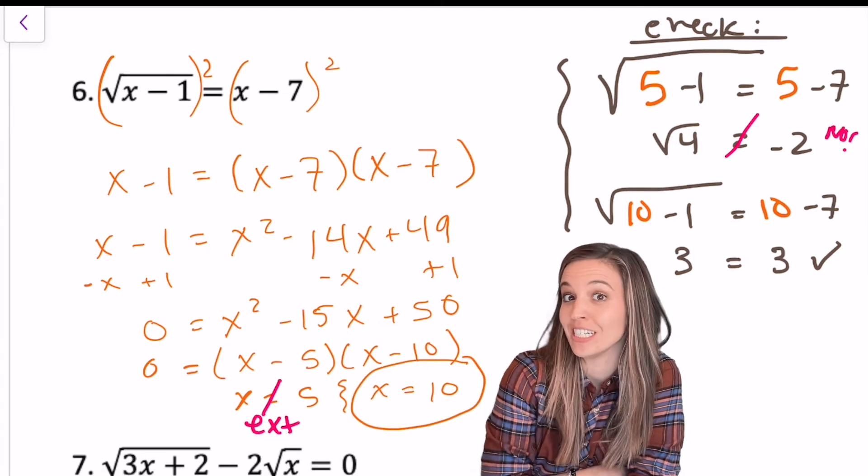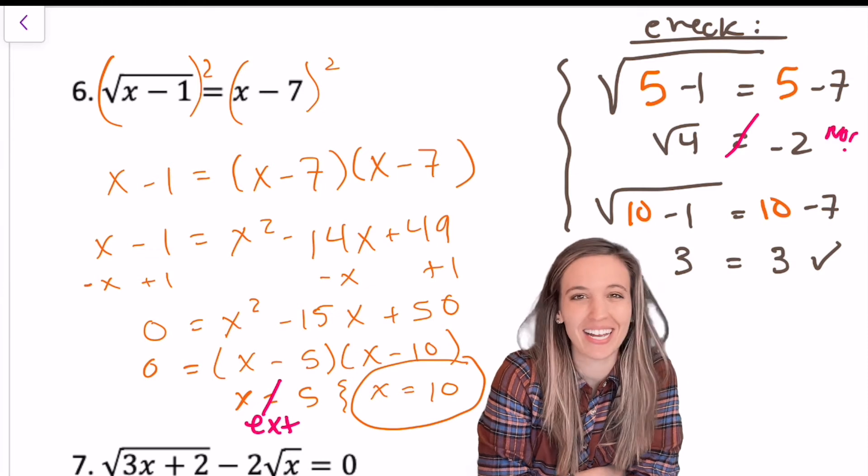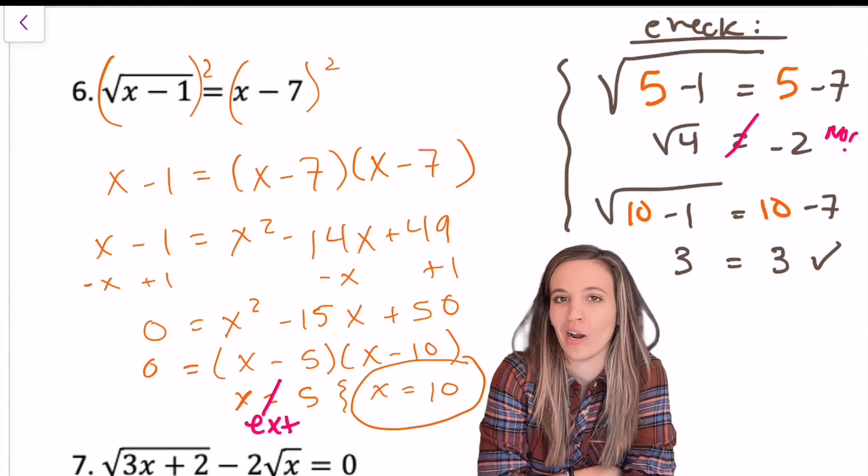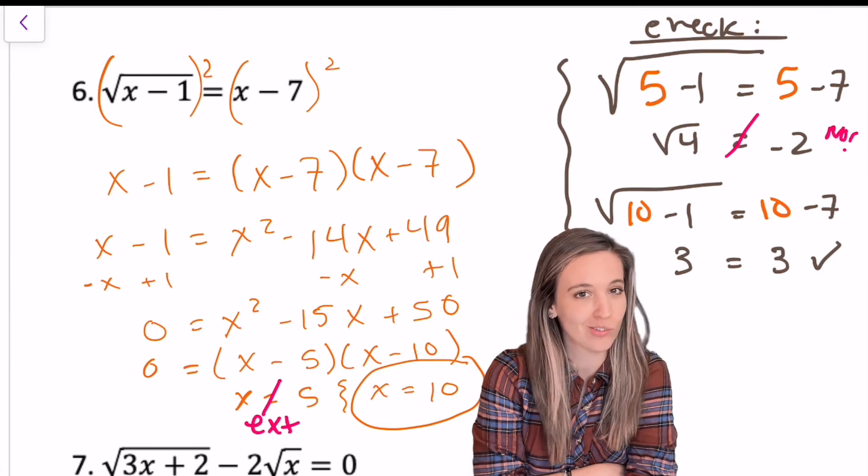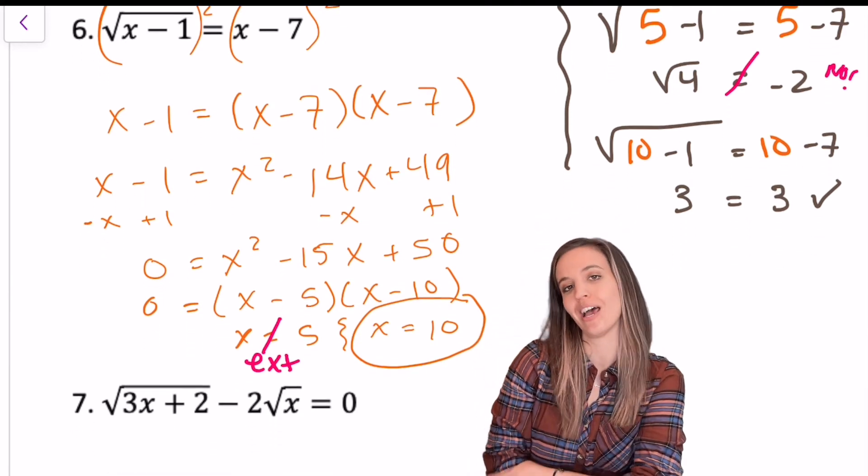All right, check it out. Did you check for extraneous? That x equals five definitely didn't work when I plugged it back into the original problem. So x equals five is extraneous. x equals 10 is my solution.